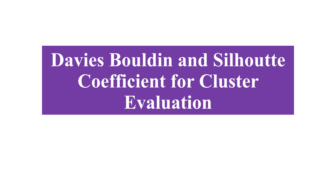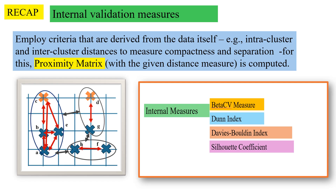We now study the Davis-Bouldin and Silhouette index coefficient for cluster evaluation. These are internal validation measures, and internal validation measures do not have the ground truth available to them — the real ground truth labels are not available. For evaluation, they use the proximity matrix, which has been computed with whatever distance measure is provided. Among the four internal measures, we have studied beta-CV and Dunn index, and today we come to Davis-Bouldin and Silhouette coefficient.